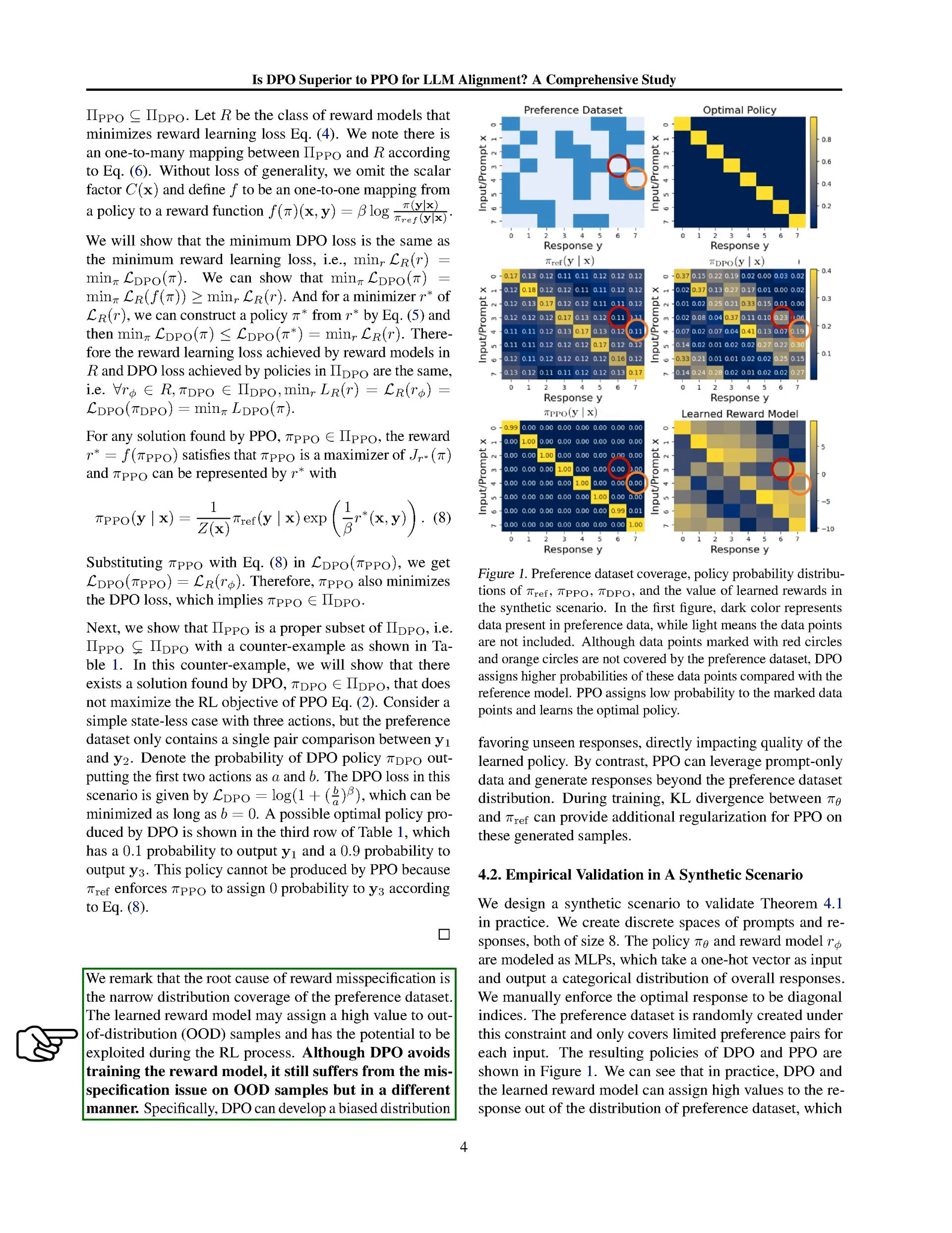The root cause of reward misspecification lies in the limited coverage of the preference dataset. The learned reward model may assign high values to out-of-distribution samples, which can be exploited during the reinforcement learning process.